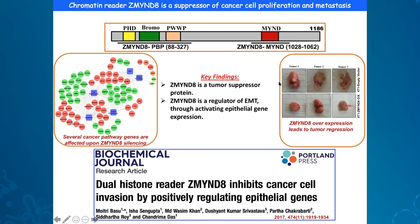We delineated the mechanism and showed that epithelial genes are positively regulated by ZMYND8, which is a possible mechanism through which the protein elicits its tumor suppressor function. We proceeded to mouse models and found that D8-overexpressed cells, when grafted into mice, showed much smaller tumor sizes compared to empty vector-expressing cells in mouse xenografts, indicating D8 definitely has anti-tumorigenic function in vivo.